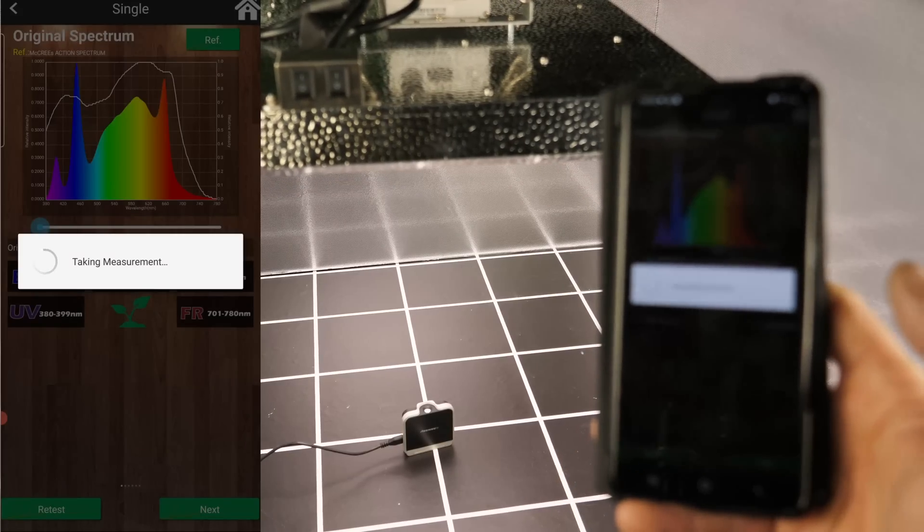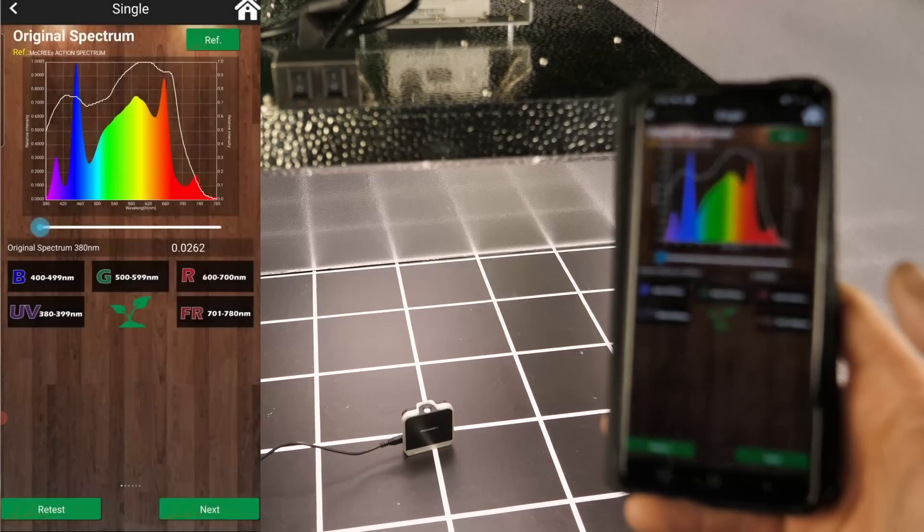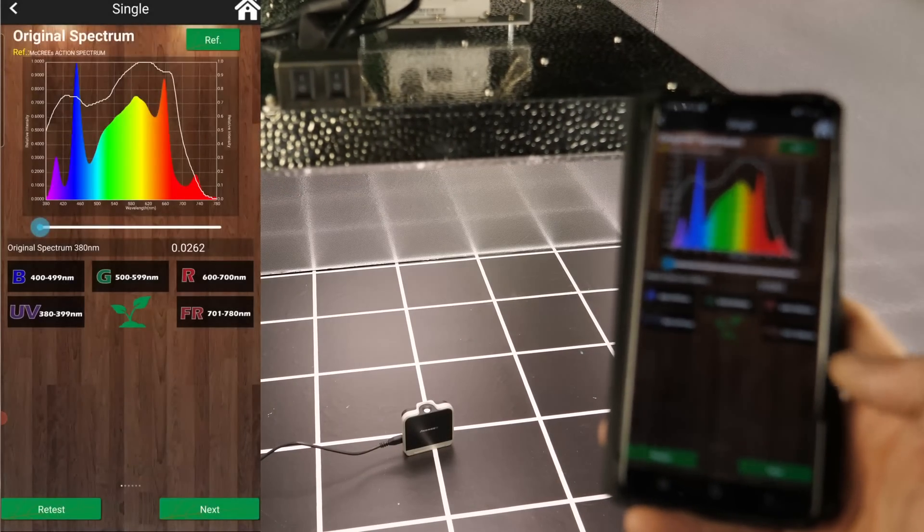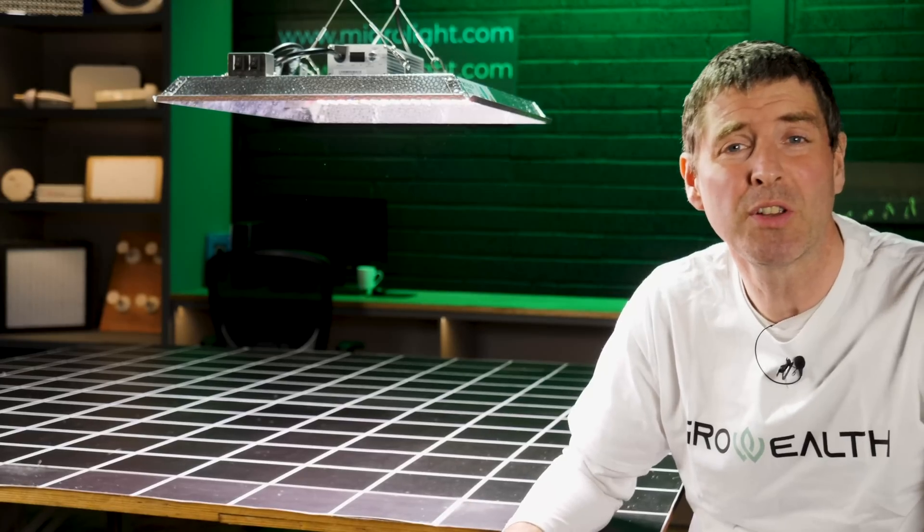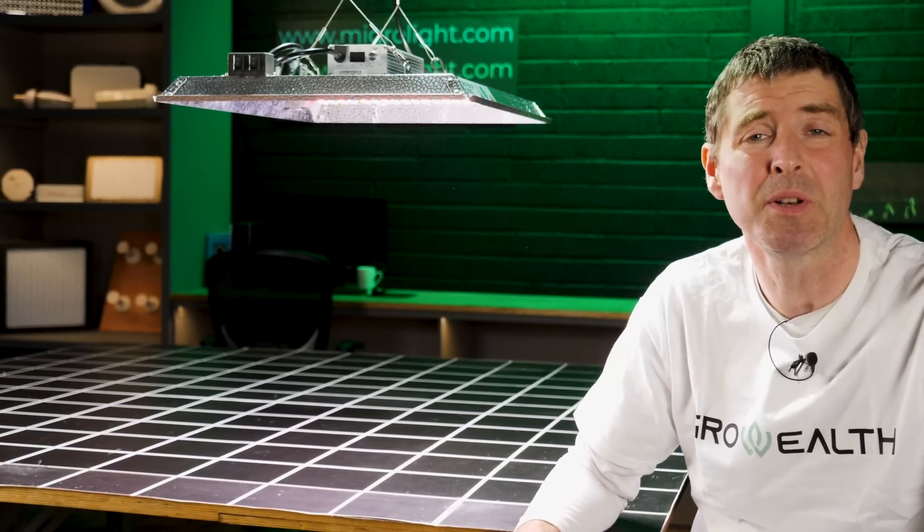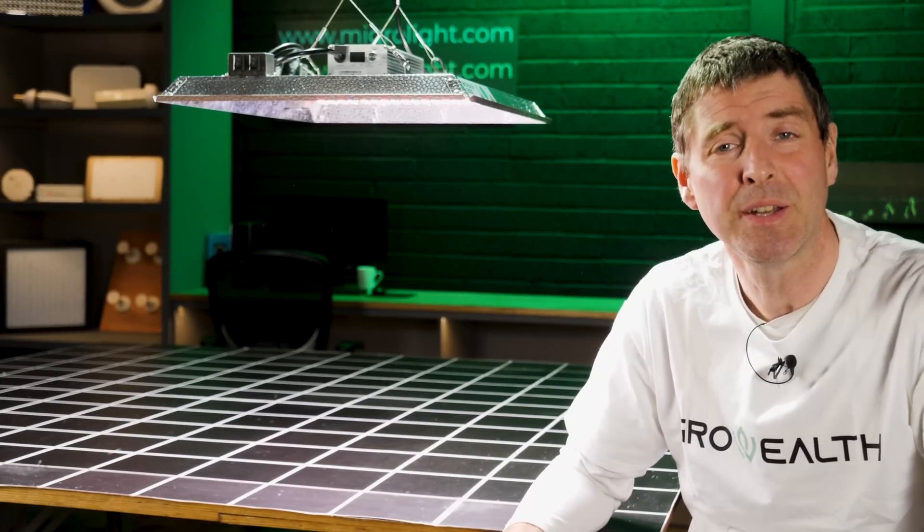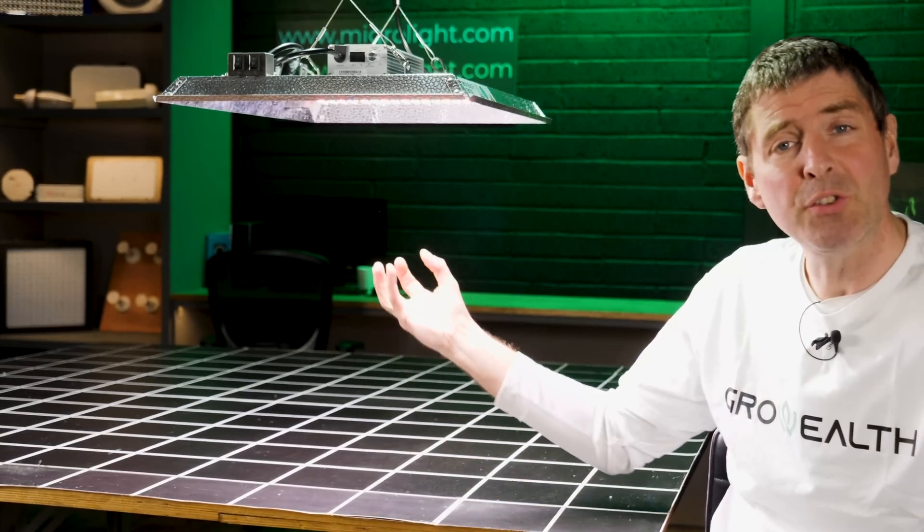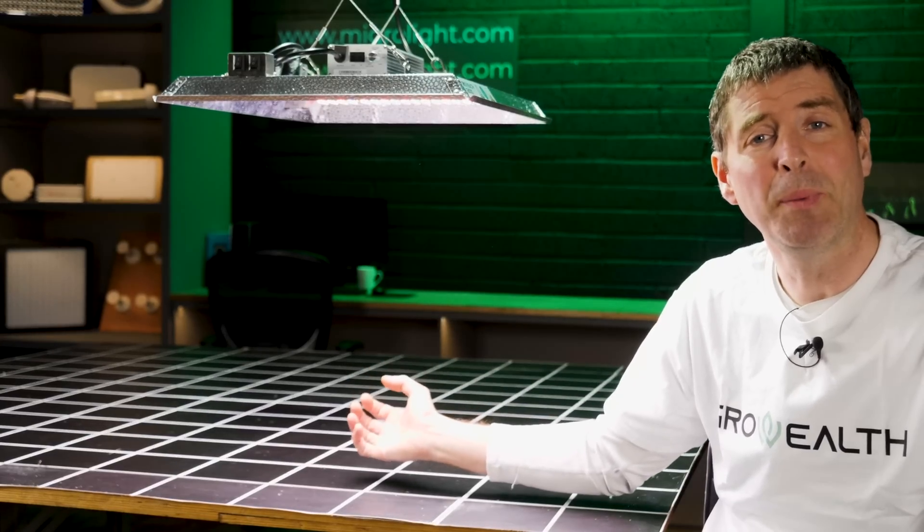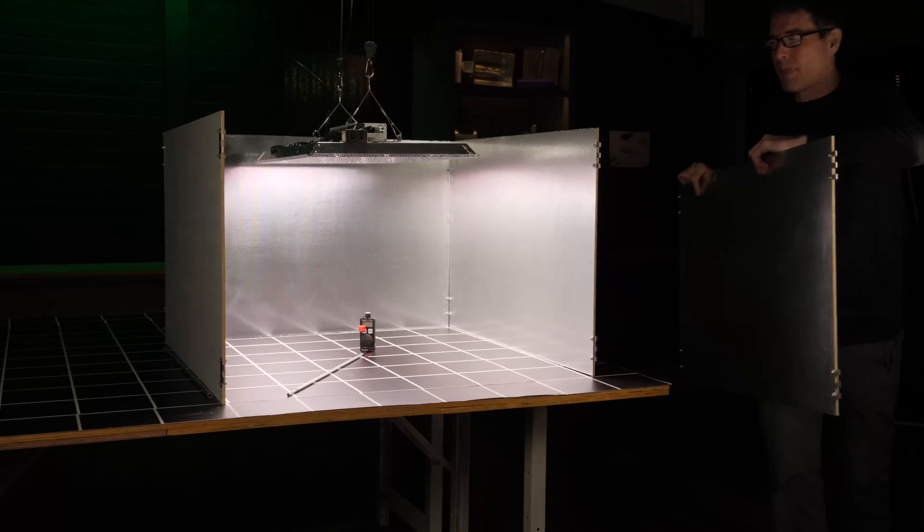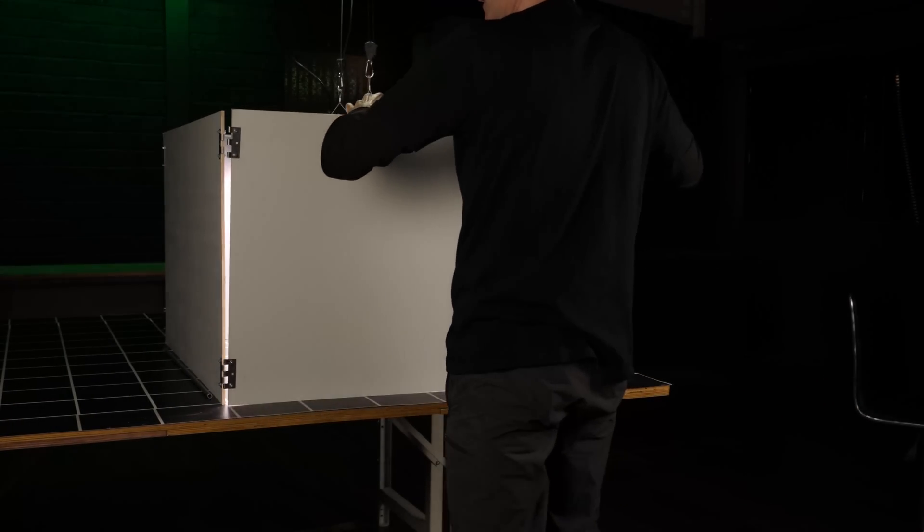You've got dimming controls on top, so you can dim manually. To assess performance of the light, I hung it up in its specified 3 foot by 3 foot or 90 centimeter by 90 centimeter test area. And I was happy to find that the optimum hanging height, which for me, is dropping the light down on full power until the center point measurement is in around 1000 micromoles.